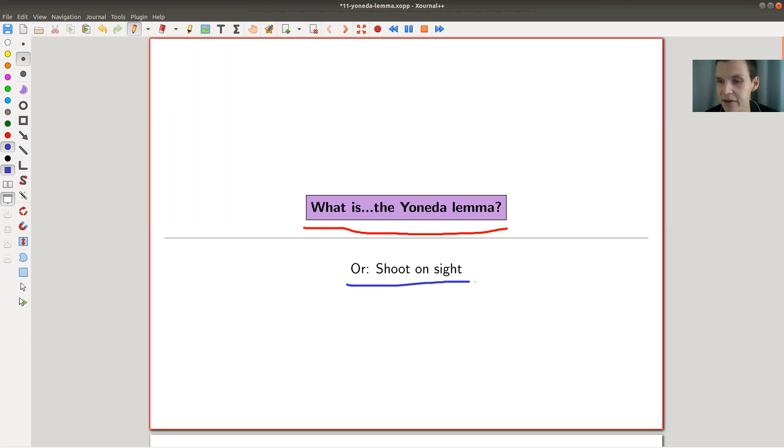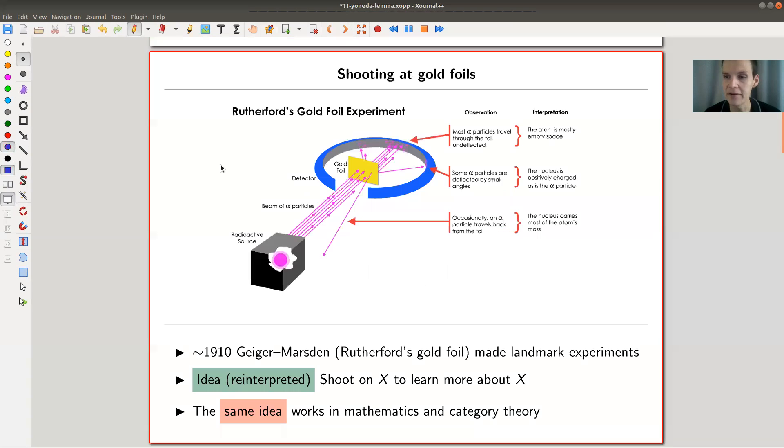So I'm taking the approach to shoot on sight, to explain it in a slightly, maybe slightly strange way. I hope you will like it. So let's have a look at, in my opinion, the main idea behind the Yoneda Lemma. And surprise, surprise, what I would like to do is I would like to shoot on gold foils.